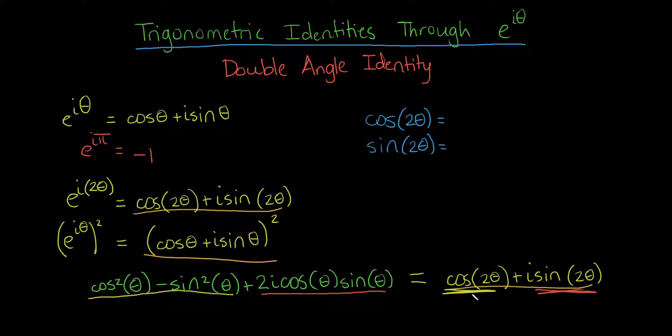And amazingly, such a simple method shows us that the cosine of 2 theta, over here, this real part of the equation, equals the real part of this equation. The cosine squared of theta, minus the sine squared of theta. So let's write that down. The cosine squared of theta, minus the sine squared of theta.